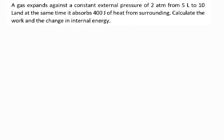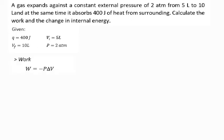Here's an example: a gas expands against a constant external pressure of 2 atm from 5 liters to 10 liters, and at the same time it absorbs 400 joules of heat from its surroundings. Calculate the work and the change in internal energy. The given data are heat = 400 joules, initial volume = 5 liters, final volume = 10 liters, and pressure = 2 atm. To find the change in internal energy we calculate work first: w equals negative p times delta V. Delta V equals final volume minus initial volume: 10 L minus 5 L equals 5 liters.